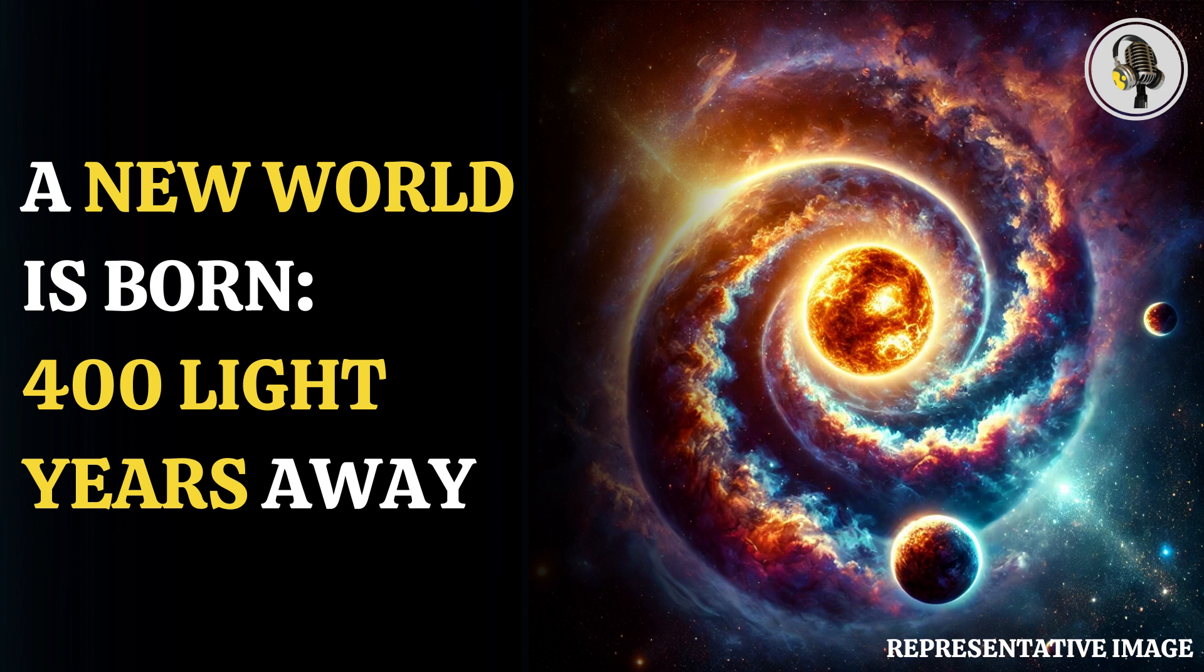PDS 70C, a giant planet, is surrounded by its own disk of material and the spiral stream is feeding it as well, which will soon result in the birth of its moons.